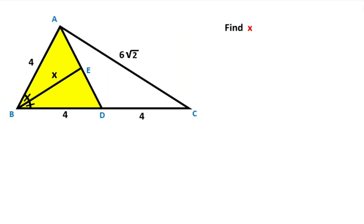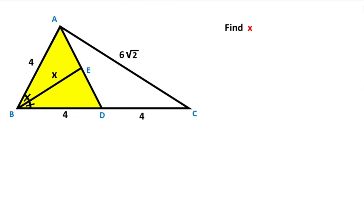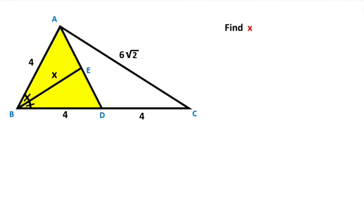Hello everyone. In this video we have one triangle, and these three parts are given four units, and there's an angle bisector line here, and this length is given six root two. The question is: what is the value of x?